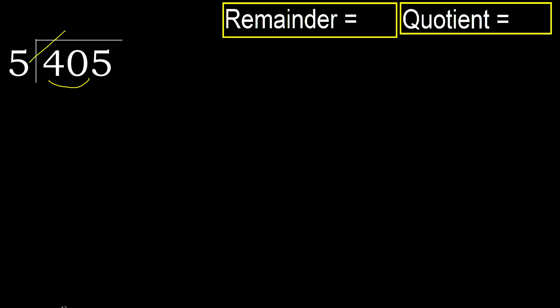5 multiplied by which number is nearest to 40 but not greater? 5 multiplied by 9 is greater. Multiplied by 8 is 40, which is not greater. 40 minus 40 is 0.